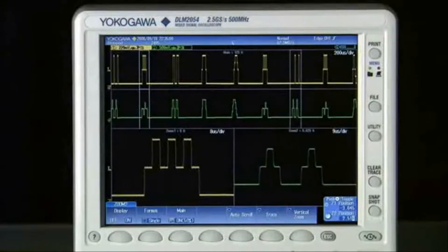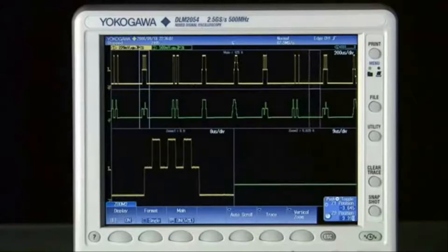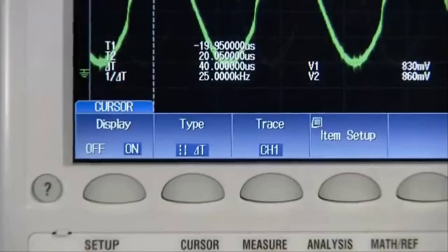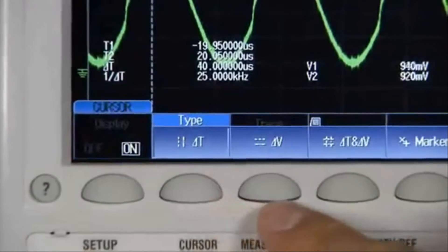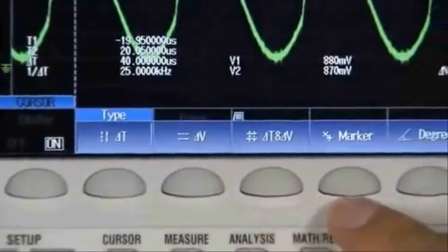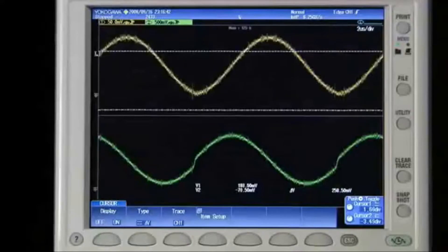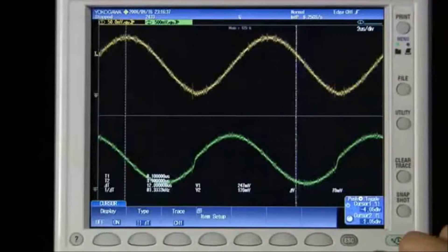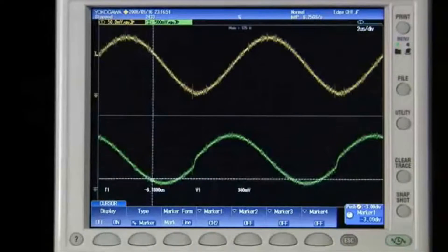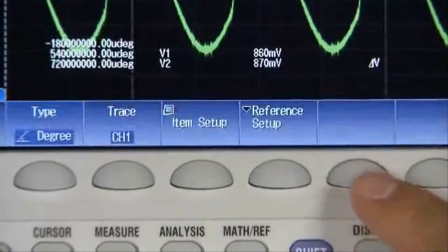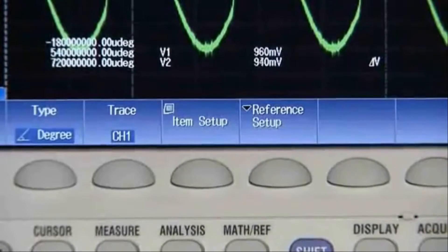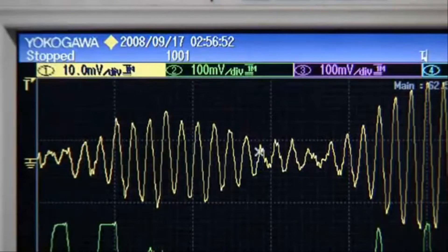An oscilloscope should give you meaningful ways of analyzing capture data. Inside the DLM2000's cursor menu, select from five cursor types, including horizontal and vertical, markers that snap to the waveform, and even a degree cursor for angular or phase measurements. Use cursors to quantify your visual observations.